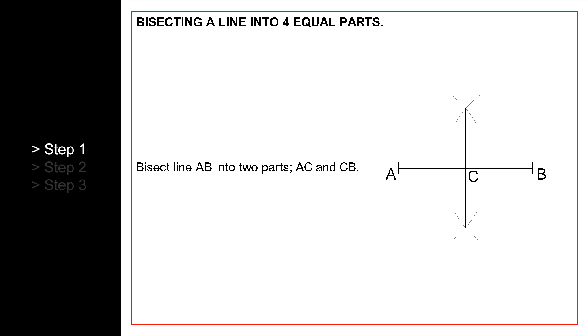Now that we have two separate lines AC and CB, all we need to do is to bisect each of them again.